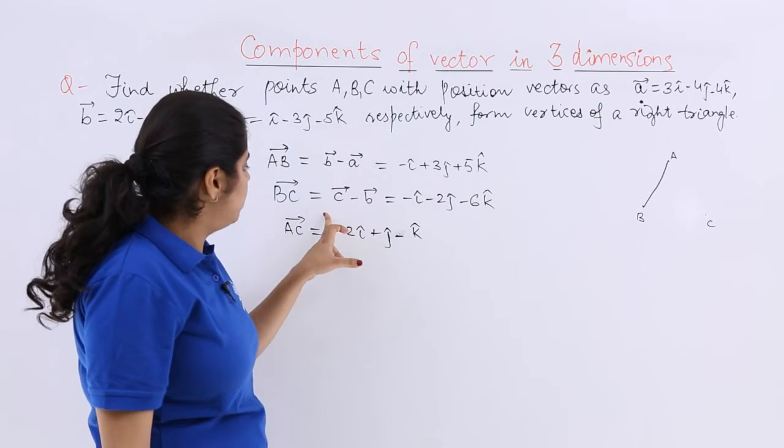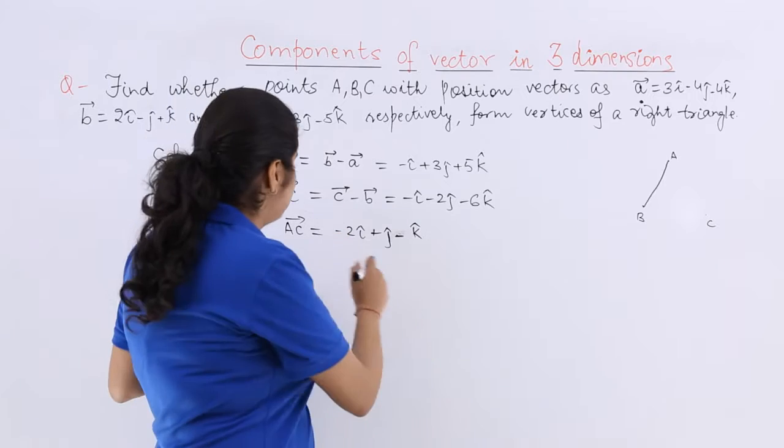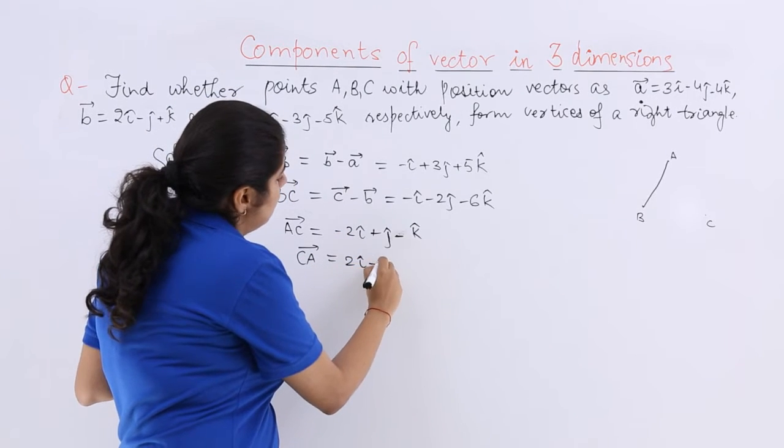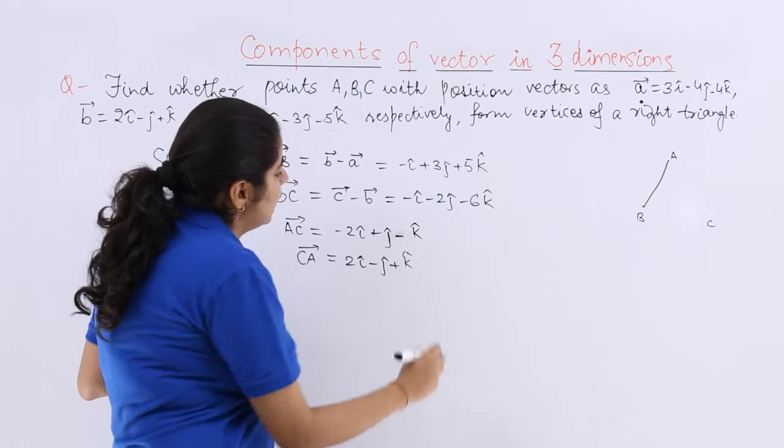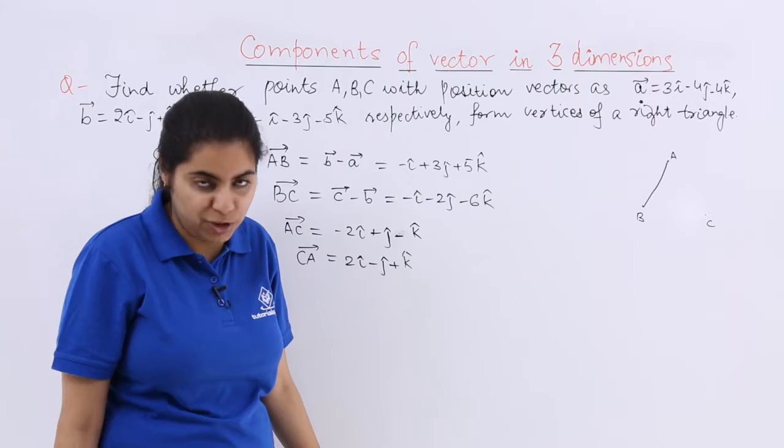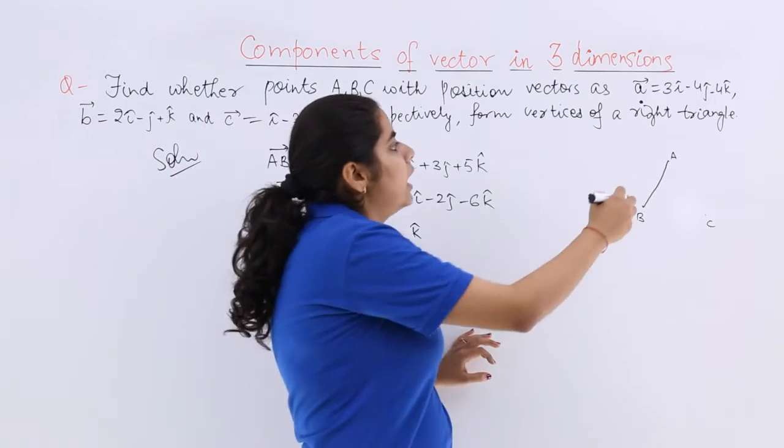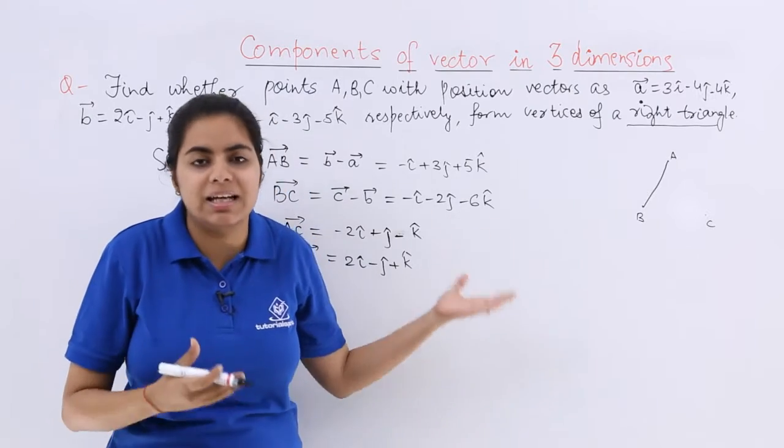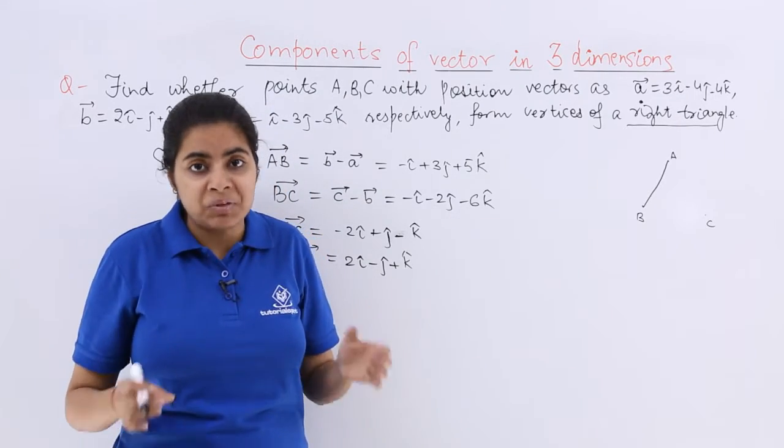Now AB, BC, AC is known. If I have to find CA also I can find out. CA is nothing but only the negative sign will be common and we will have some different sign and orientation.